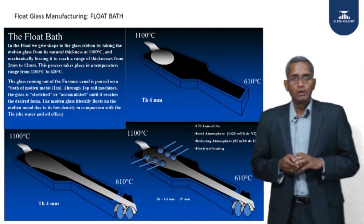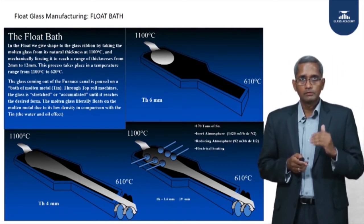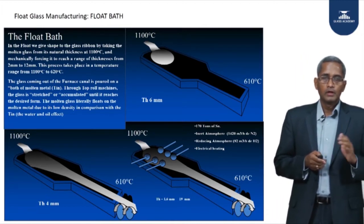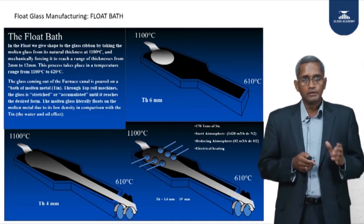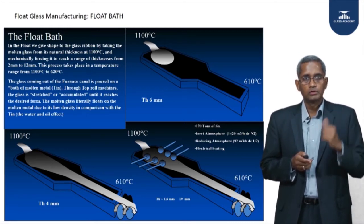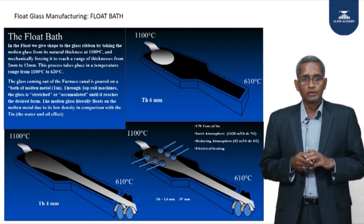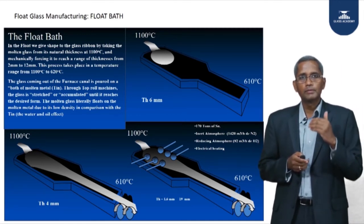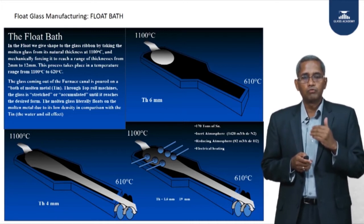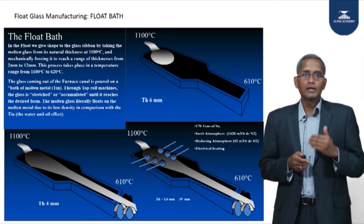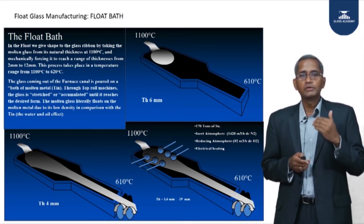Having efficiently melted the glass using regenerated heat, the glass is homogeneously brought together in the neck, and the temperature in the working end is reduced to 1100°C. This is a very critical temperature level — 1100°C is the temperature at which we can form the glass in the forming operation, shaping it to the desired form as in most industries.